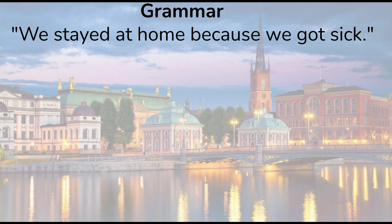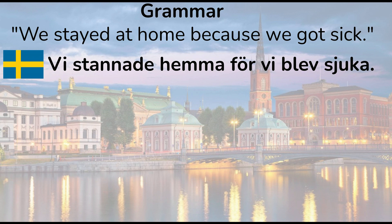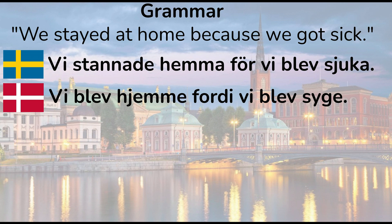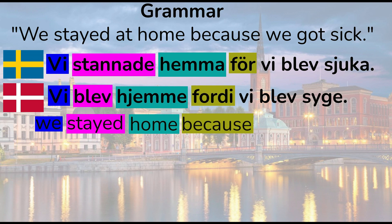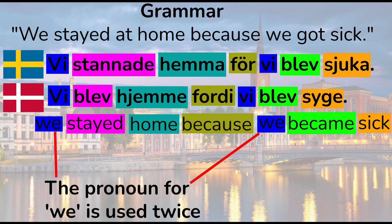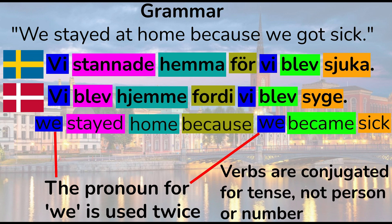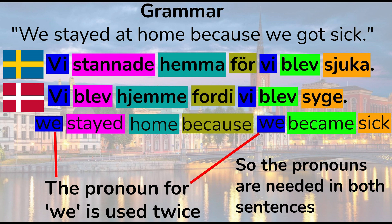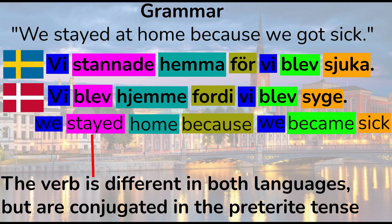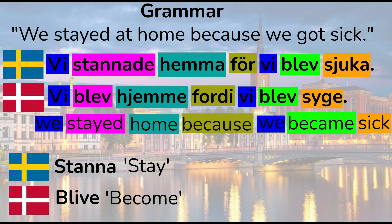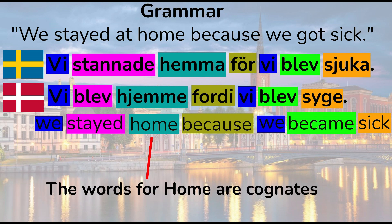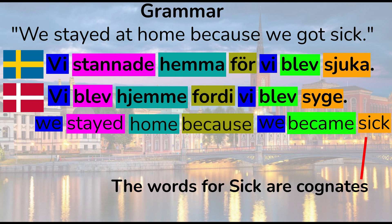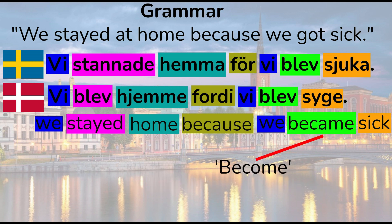And one more sentence meaning 'we stayed at home because we got sick' — in Swedish and in Danish. Word for word: 'we stayed home because we became sick'. Here we see the pronoun for 'we' is used. Remember, verbs are conjugated for tense, not person or number, so the pronouns are needed in both sentences. The verb is different in both languages for 'stay', but conjugated in the preterite tense, or simple past. The main verb in Swedish is 'stanna', in Danish that's 'bleu'. While the words for 'because' are different, the words for 'home' are cognates, and so are the words for 'sick'.